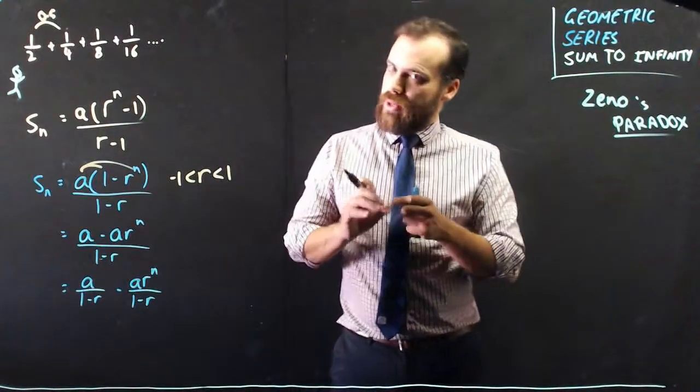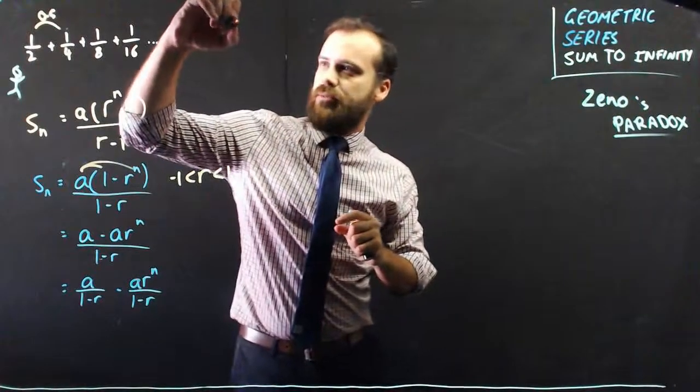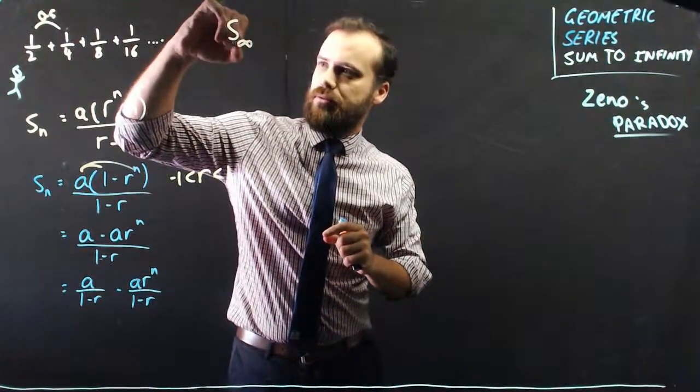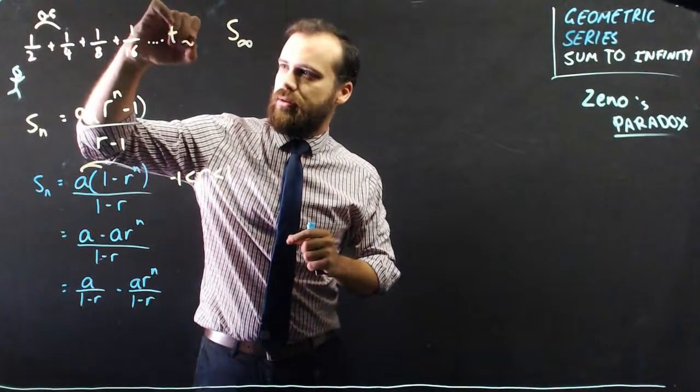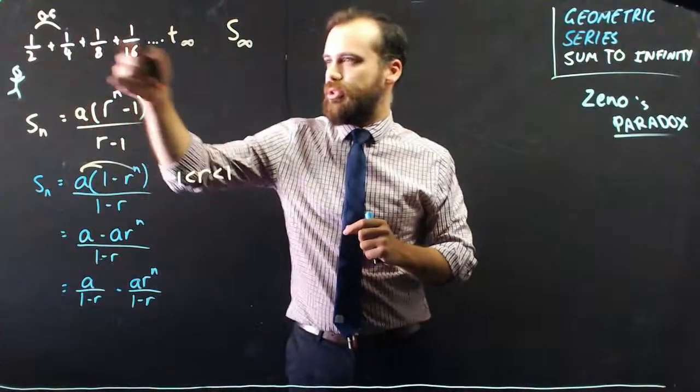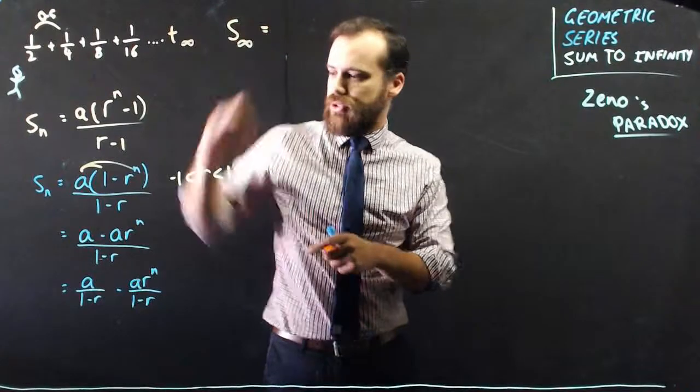Now, we have to start messing with infinity. So, we're going to say the sum to infinity, so that means an infinite number of terms, term infinity. So, 1 plus all the way up to term infinity. So, the sum to infinity is going to be equal to...